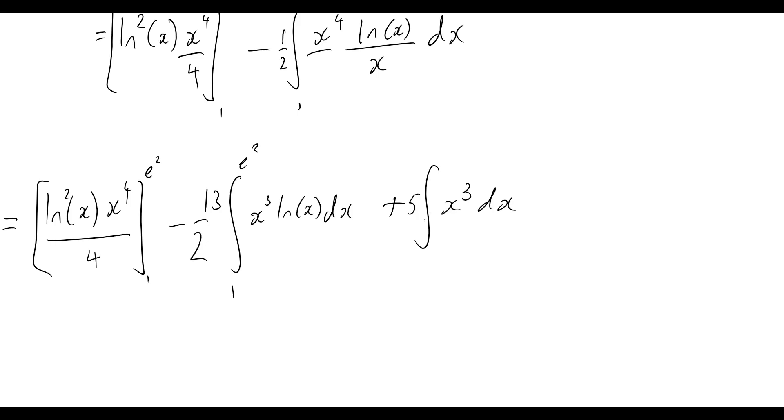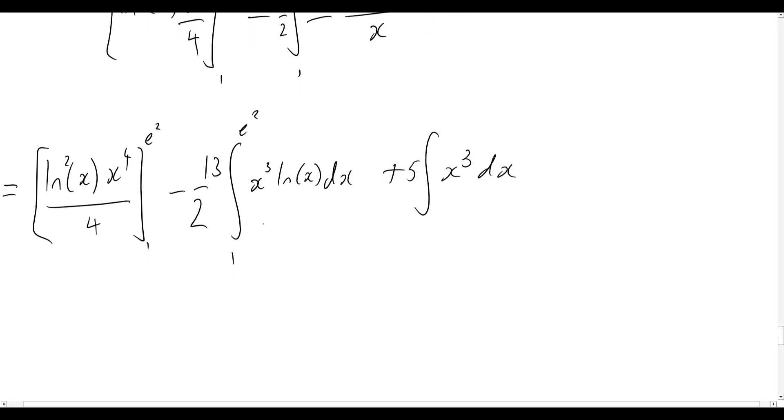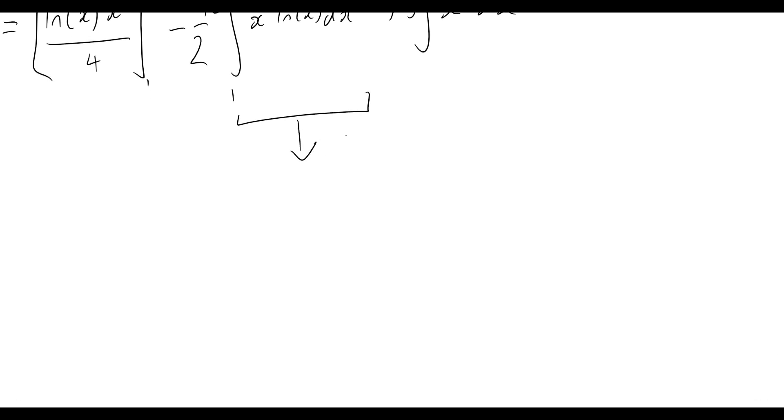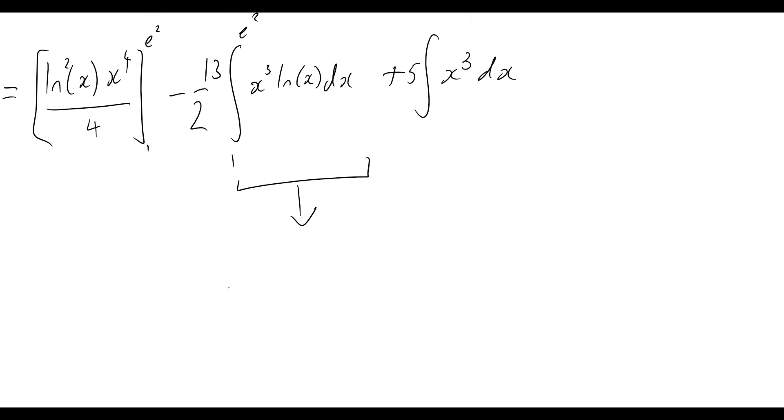And so let's work that one out now. So what will this become? Let's have a quick look. So we'll have, again, integration by parts formula. So integral of u dv is equal to uv minus integral of v du.